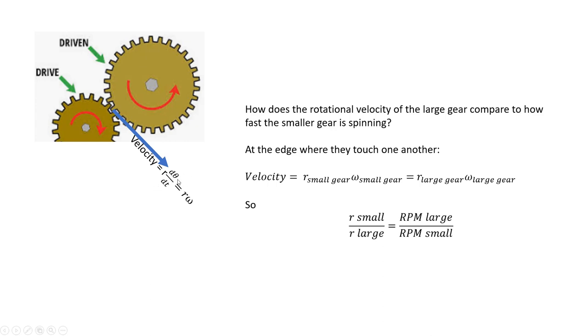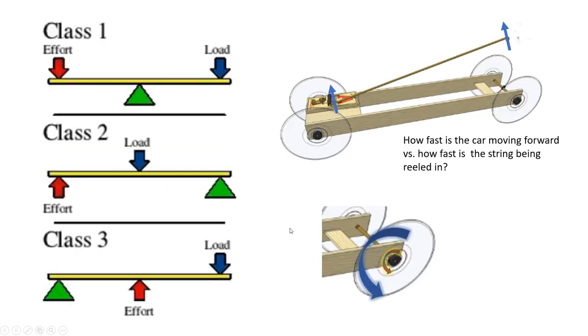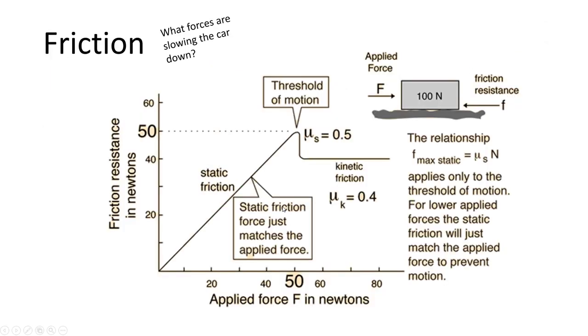So you can kind of relate how fast one side is rotating versus how fast the other side is rotating by just velocity is equal to R times the angular velocity. The angular velocity is instead of meters per second, it's radians per second. So it's kind of the same as circumference equals 2 pi R or distance is R times theta. Change in distance over time is change in theta over time. So the ratio of the small to large gear is also the inverse of the relationship of the rotations per minute. So you can see how fast different gears are spinning for that. So a lot of really good physics in here. You've got potential energy to kinetic energy.